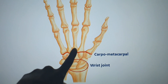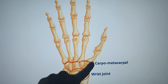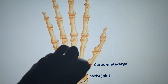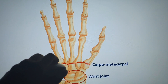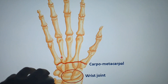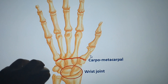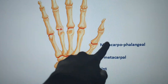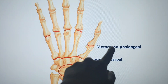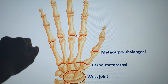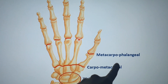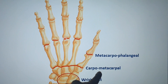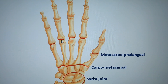The carpometacarpal joint is a saddle joint. It is between the carpals and the thumb's metacarpal — it is important to note that the thumb's carpometacarpal joint is a saddle joint. All the other metacarpophalangeal joints are condylar joints, except for the thumb which is a saddle joint.